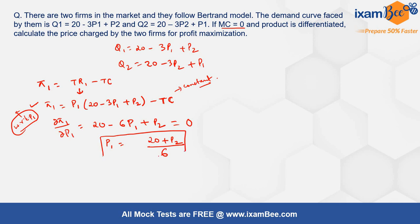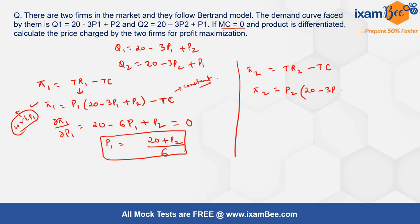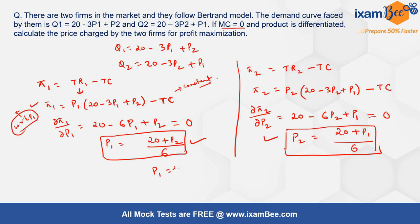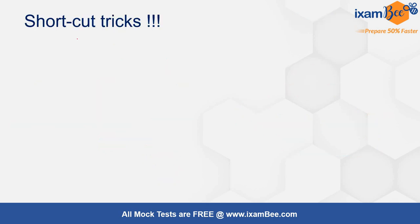Similarly, the profit function for firm 2 is π2 = P2(20 − 3P2 + P1) minus total cost. Differentiating with respect to P2 gives ∂π2/∂P2 = 20 − 6P2 + P1. Setting this equal to zero gives P2 = (20 + P1) / 6. We now have two equations and two unknowns. Solving simultaneously gives P1 = 4 and P2 = 4.